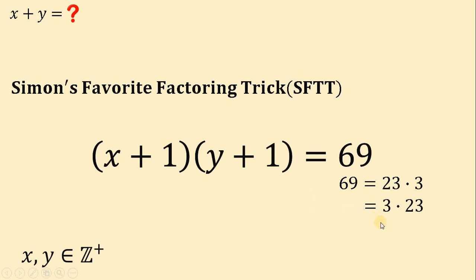Take note, if we have 1 times 69, one of its factors is 1. So one of the variables, either x or y, becomes 0. And we don't want to have that because we know for sure that x and y are positive integers.